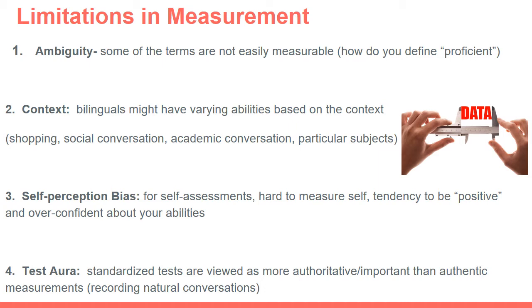Another limitation is context. Many times assessments focus on one particular context, yet bilinguals often have varying abilities to communicate — especially in their second language, English — based on the context. Bilinguals might be very effective communicating when they're shopping, in social conversations, or at work in real-world vocabulary. Yet they might have a very different and less developed ability to communicate in academic conversations or in particular content subjects. So you have to be careful about the context in which bilinguals are being tested.